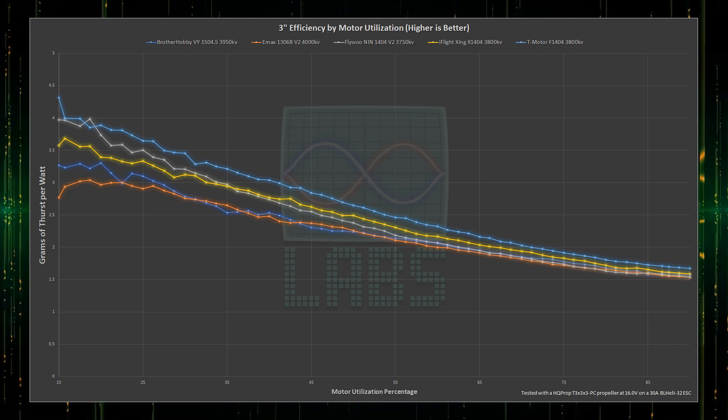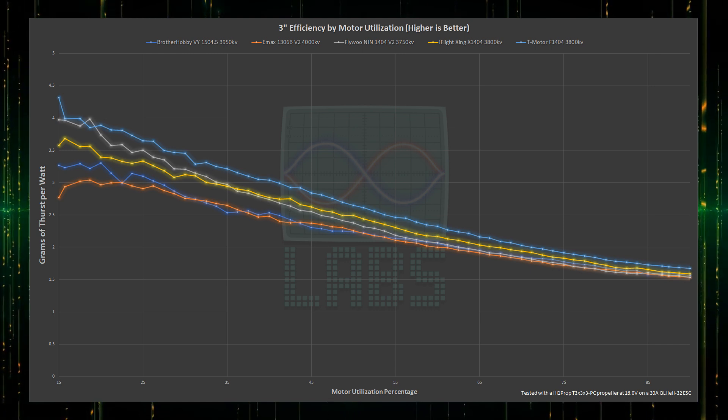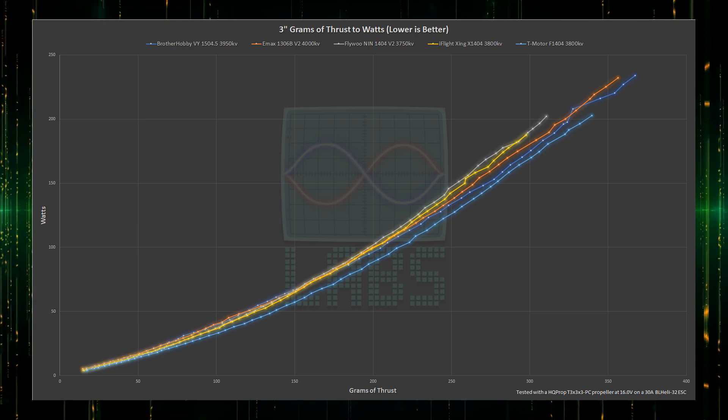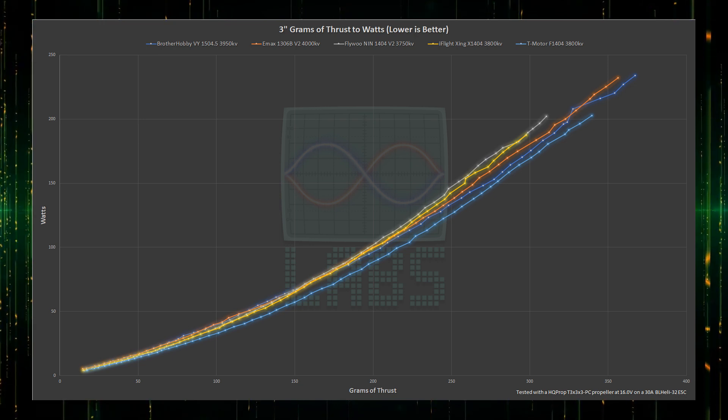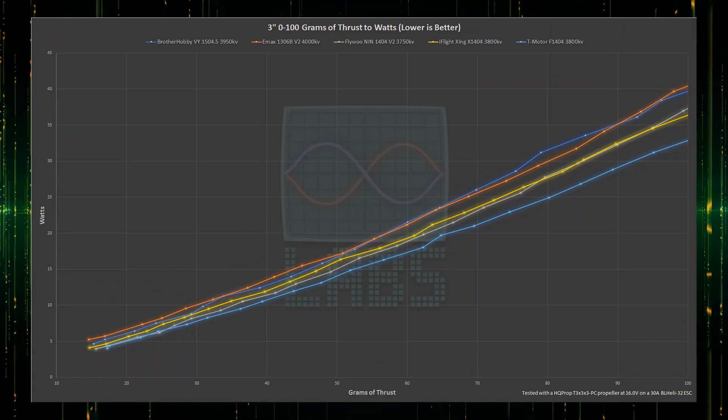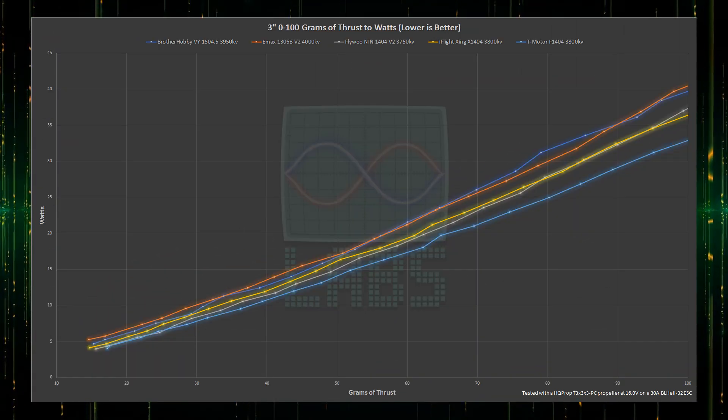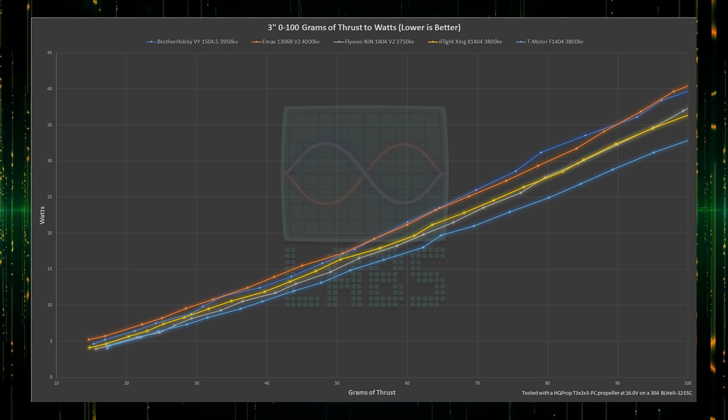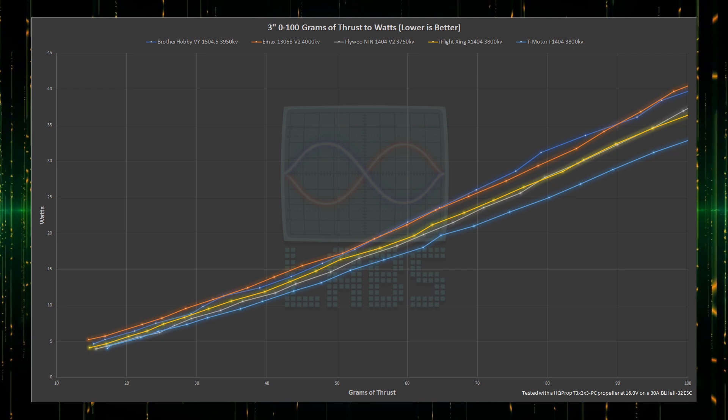Combining the data, we get the most important metric: watts of power required to generate each gram of thrust. Given the last two charts, it is no surprise to see the T-Motor clearly stand out as being the efficiency leader for every gram of thrust it poops out. Enhance! For the first 100 grams of thrust, the T-Motor has a sizable lead, with the EMAX and Brother Hobby motors being the least efficient, and the other 1404 motors hanging out in the middle being clearly outclassed.